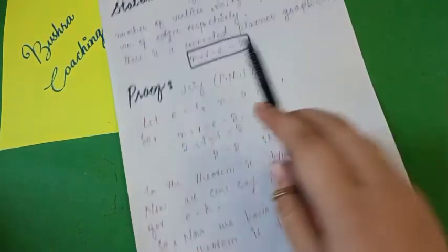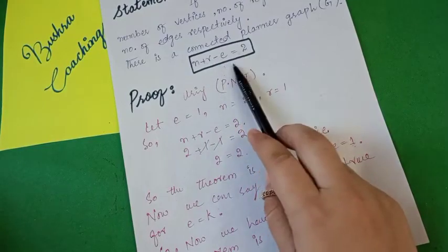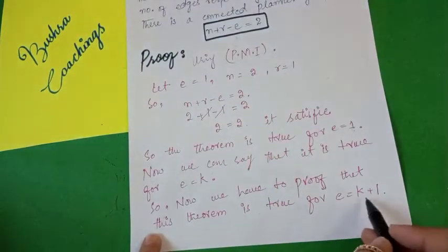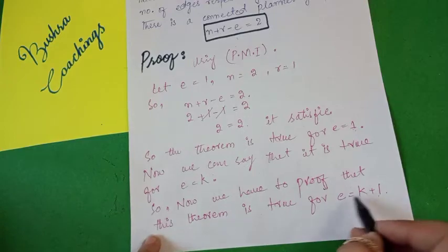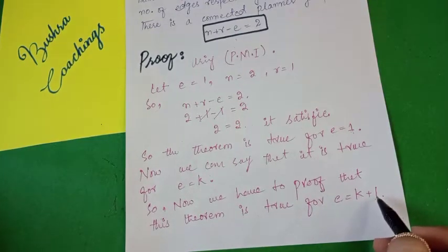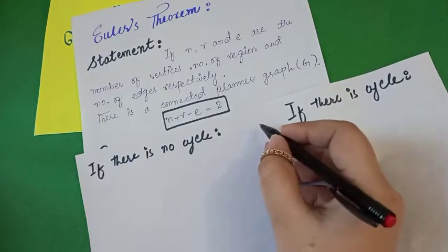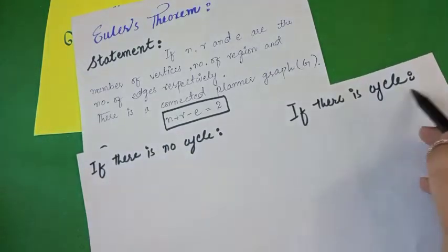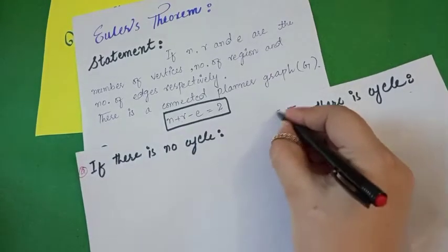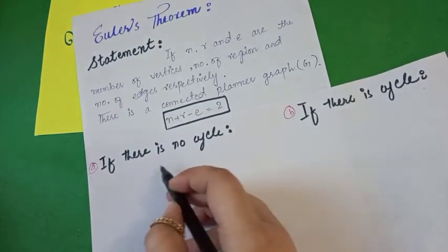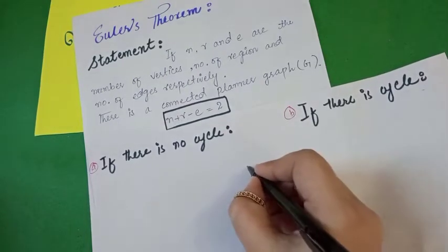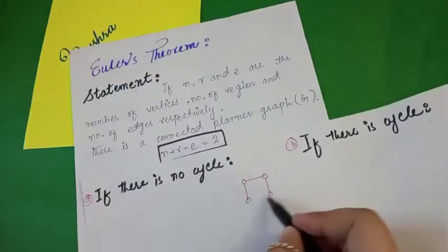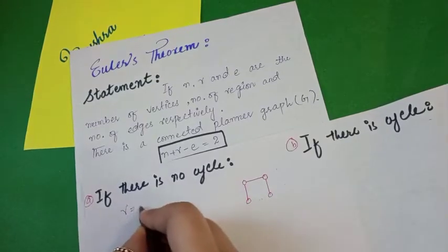We now prove this formula for E equal to k plus 1. We consider two cases: Part A — if there is no cycle, and Part B — if there is a cycle. First we prove Part A: if there is no cycle. Suppose we take a graph with four vertices, in which the region count is one, since it has no cycle.